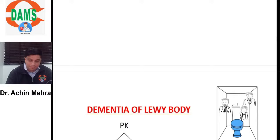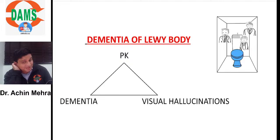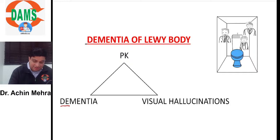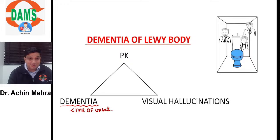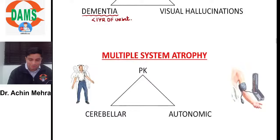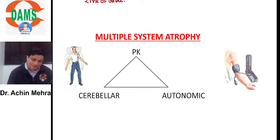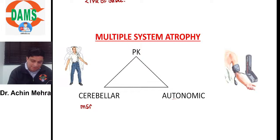Multiple system atrophy (MSA): a Parkinson patient with cerebellar symptoms like ataxia or broad-based gait is MSA-C; with autonomic symptoms like orthostatic hypotension is MSA-A. PSP has two forms: PSP-P (Parkinson type) initially responds to levodopa before progressing to the Richardson form. MSA is also known by the older term Shy-Drager syndrome.